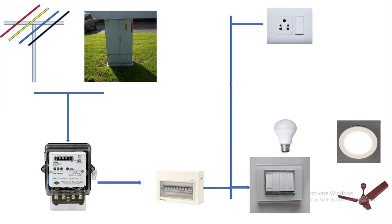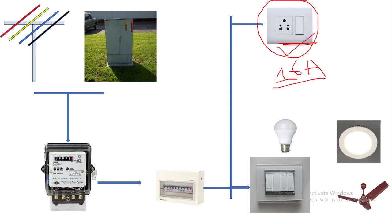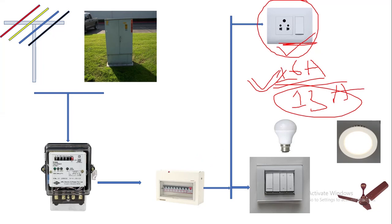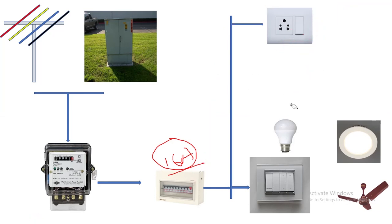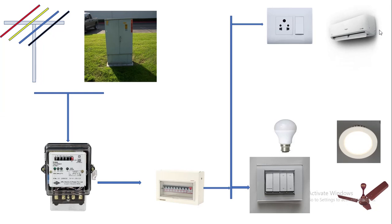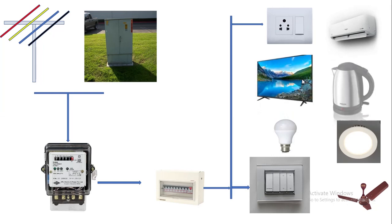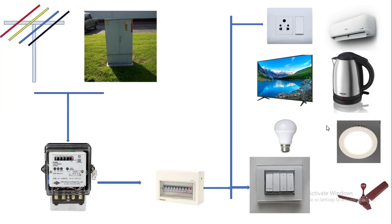The other circuit is the power circuit, which is used to feed power to the power outlets in our home. Generally we use a 16 ampere MCB for the power circuit. From this power circuit we can operate home appliances like a split AC unit, an LED TV, and other appliances connected through the outlets. In this way, power flows in our home.